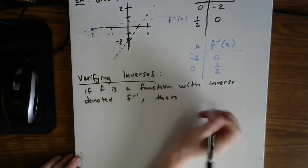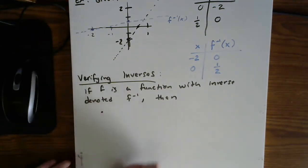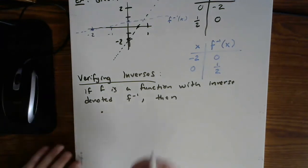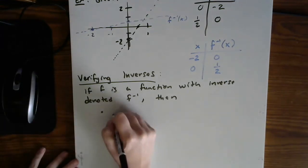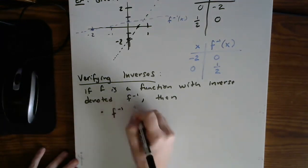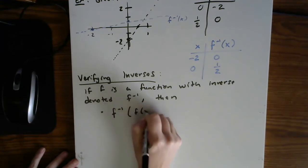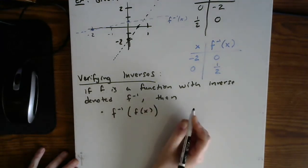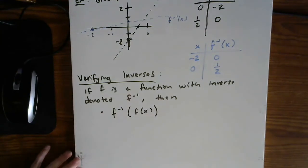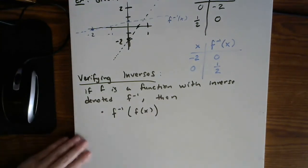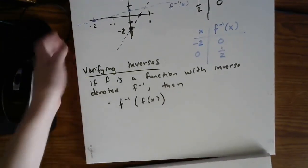So let's say if f is a function with inverse denoted as f inverse. Then using compositions, two things can happen. So first of all, you can compose your inverse with the original function.